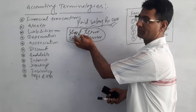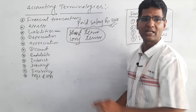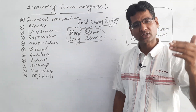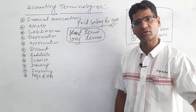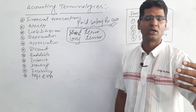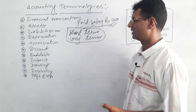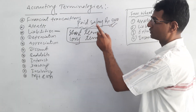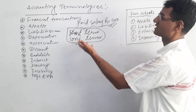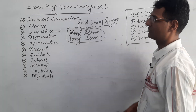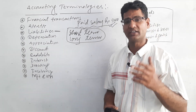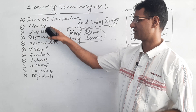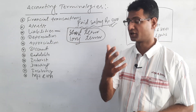Long-term liabilities are those payable amounts which a business has to pay after one year — amounts we can use for more than one year, two years, three years, or four years. I will discuss assets and liabilities in detail in further videos.